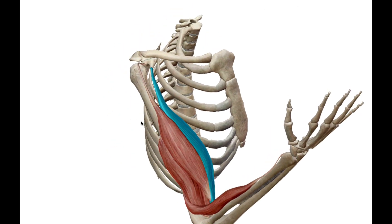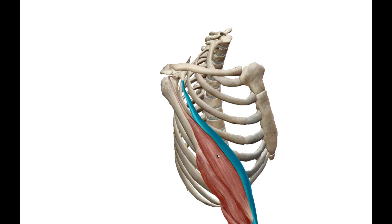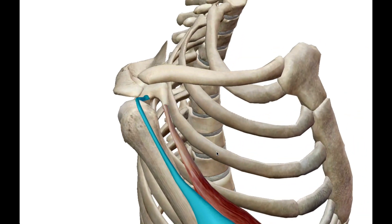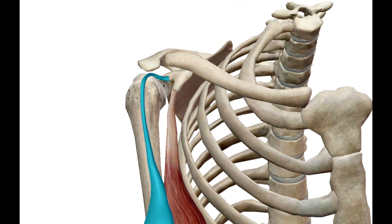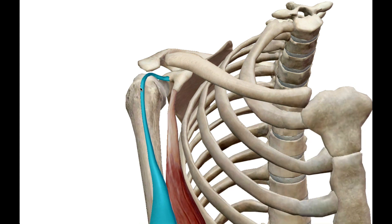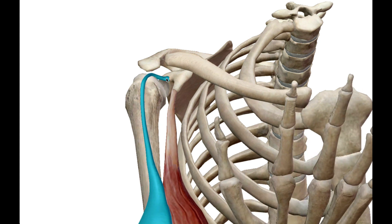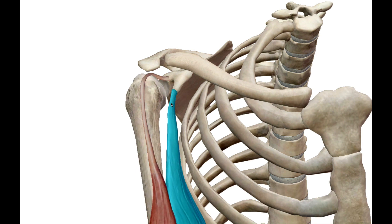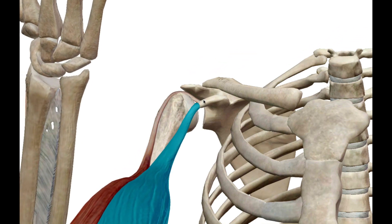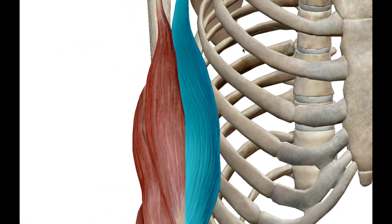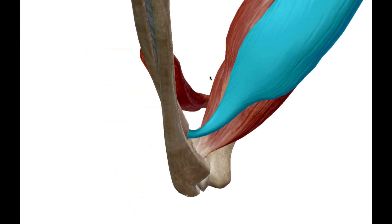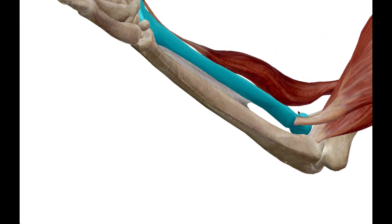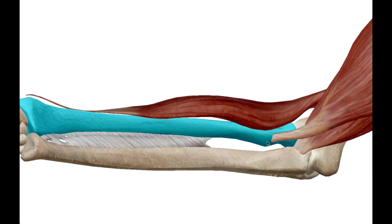The biceps — 'bi' meaning two — has two heads. The long head's origin is on the superior aspect of the glenoid cavity. The short head is connected at the coracoid process — remember, 'crow's beak.' Running down the arm, it attaches at the radial tuberosity on the radius, so when it shortens it pulls up the radius. It also embeds itself into the interosseous membrane, though that's not visible in this image.